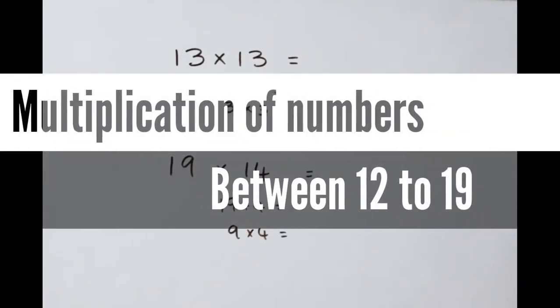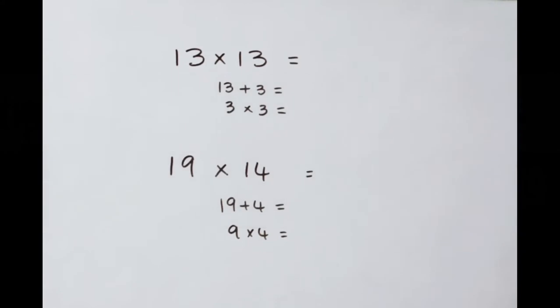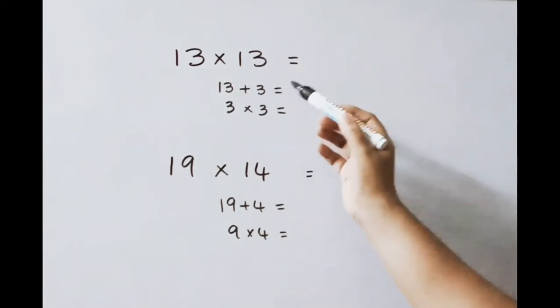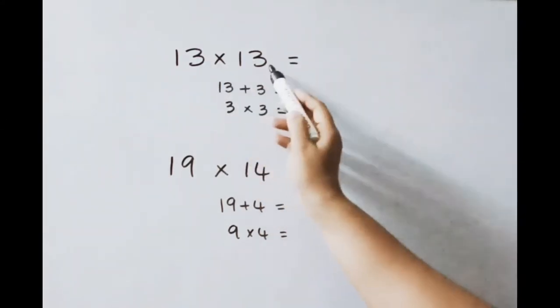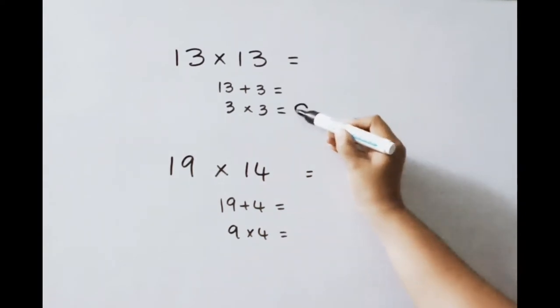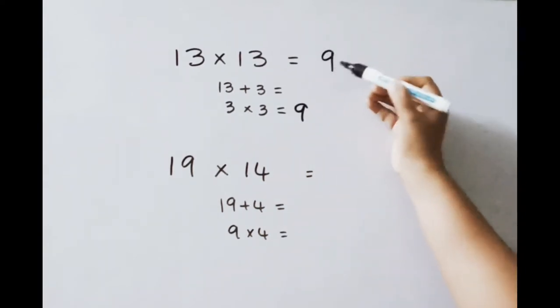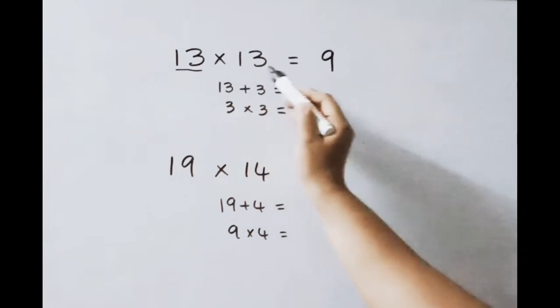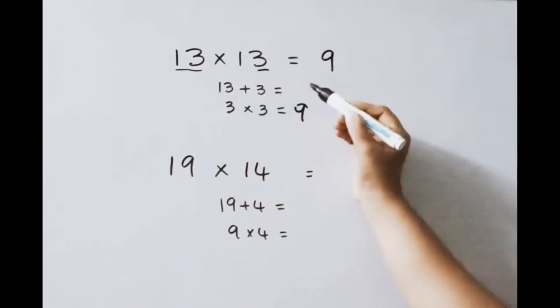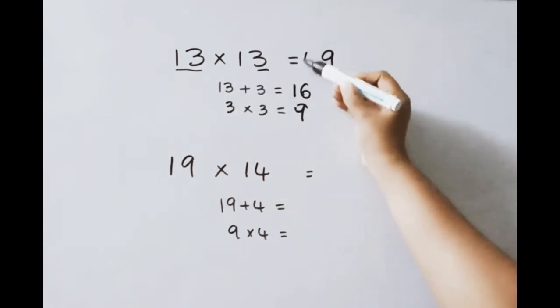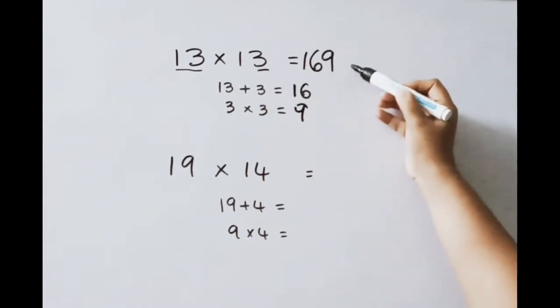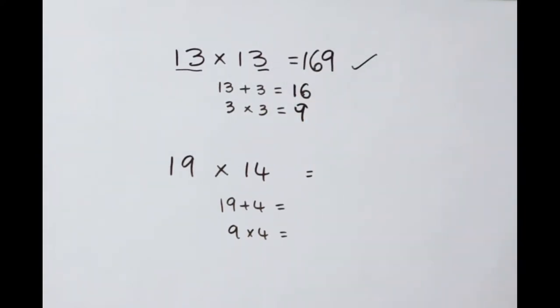Multiplication of numbers between 12 to 19. First see 13 into 13. Units place value multiply. 3, 3's are 9. Next, 13 plus units place value. 13 plus 3, 16. First part answer. So 13, 13's answer 169.